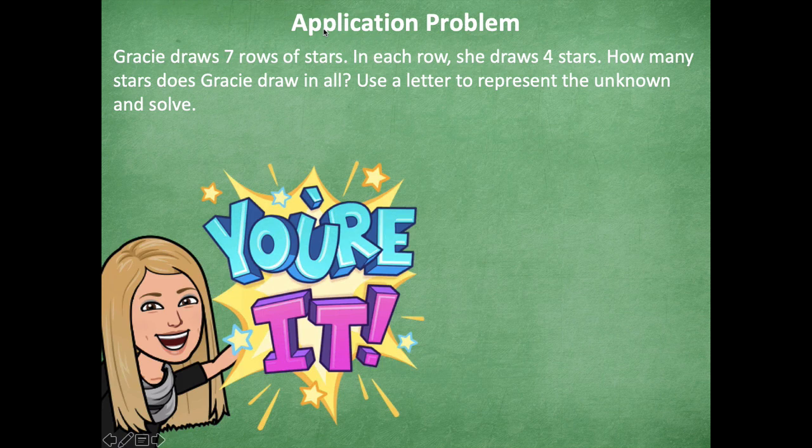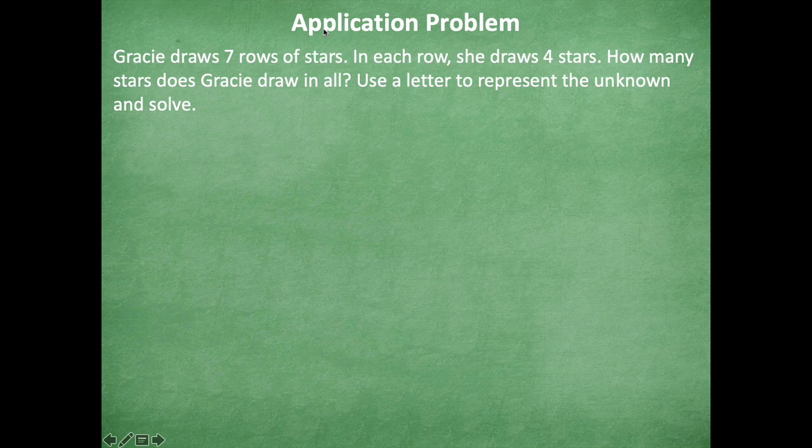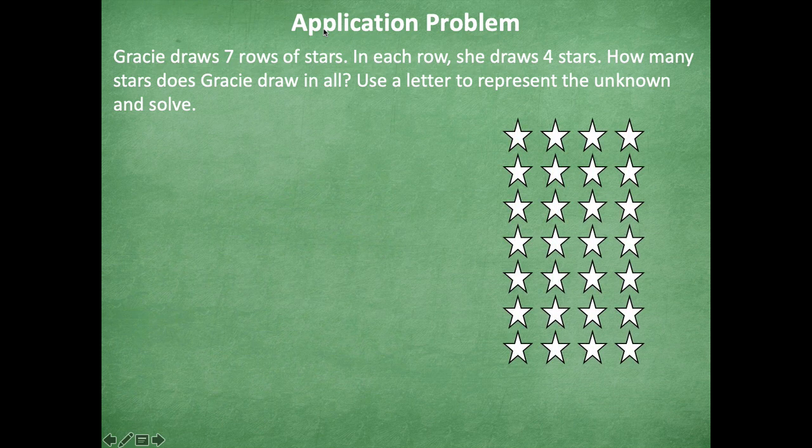All right friends, make sure to pause if you need more time, otherwise here we go. All right, so I drew the array for us here of seven rows with four stars in each. That models seven times four equals G. I just happen to use G for Gracie. Okay, so we can skip count as we go through.